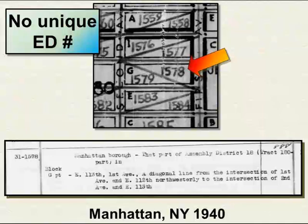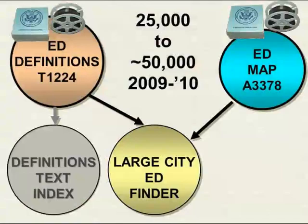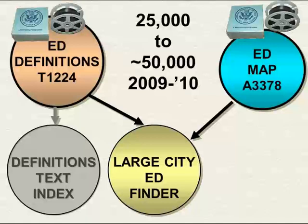Even as Joel explains, a chat participant named Tessa reports she just found the right enumeration district for her family in Seattle using the tool — a live breakthrough. Joel notes his concern that the intellectual basis for what they're doing isn't widely understood — people need more than just plugging numbers into a utility. He then explains that after building the large-city database, he added streets from NARA's ED maps to boundary cities, creating complete street indexes for all cities of 25,000 or more.